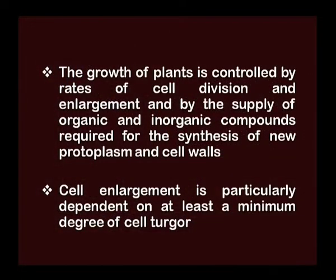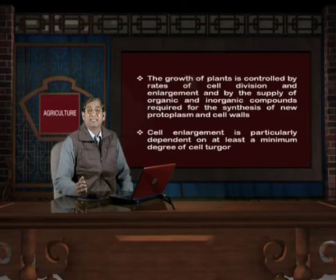The growth of plants is controlled by rates of cell division and enlargement, and by the supply of organic and inorganic compounds required for the synthesis of new protoplasm and cell walls. Cell enlargement is particularly dependent on at least a minimum degree of cell turgor. Whenever there is full turgor in the cell, growth occurs.